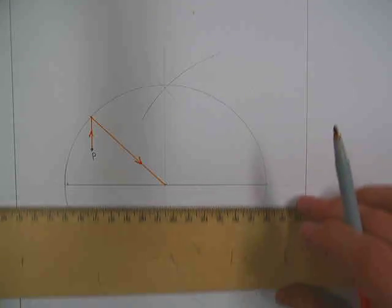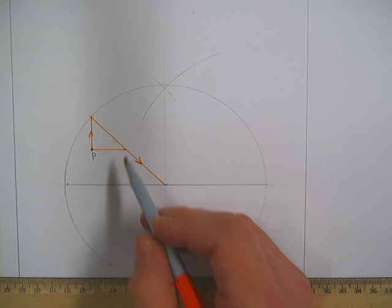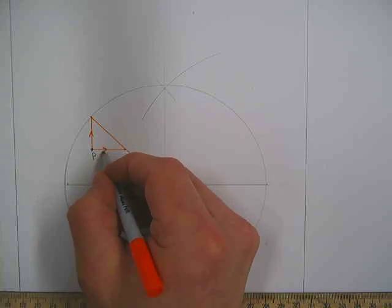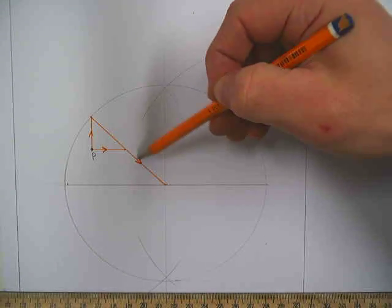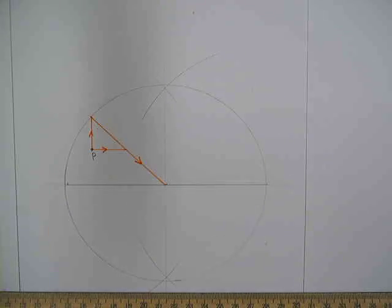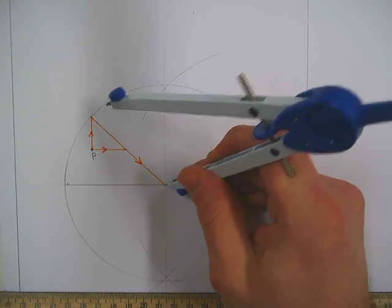And then from the point P, bring it across parallel with the major axis up until it hits this line. And this distance here is the radius of the minor auxiliary circle.